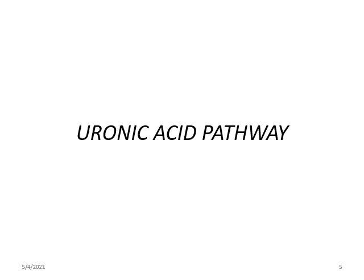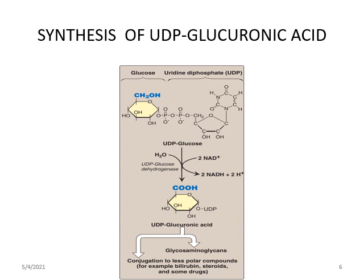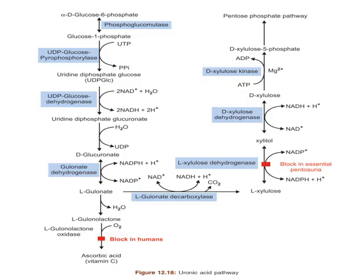Now let us discuss the uronic acid pathway in detail. The first reaction is the activation of glucose to UDP glucose, already discussed, and UDP glucuronic acid has significant roles in the human body to be explained in coming slides. The first reaction is the simple isomerization of alpha-D-glucose 6-phosphate to glucose 1-phosphate by phosphoglucomutase, followed by glucose 1-phosphate reacting with uridine triphosphate to form UDP glucose, catalyzed by UDP glucose pyrophosphorylase.